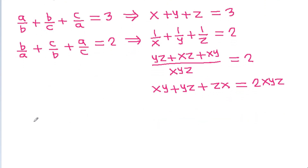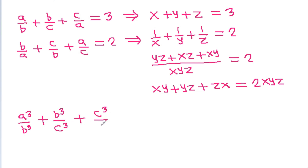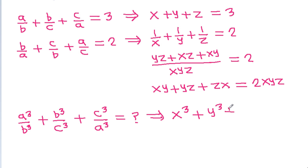And we have to find a³/b³ + b³/c³ + c³/a³. So a³/b³ will be x³, plus b³/c³ will be y³, plus c³/a³ will be z³.